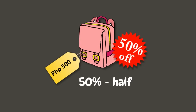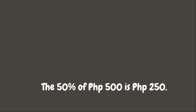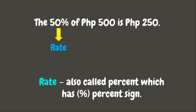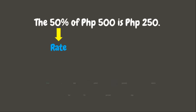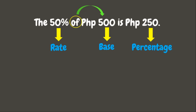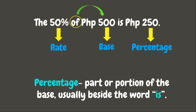Do you know what is 50% or half of 500 pesos? It is 250 pesos. This means that the 50% of 500 pesos is 250 pesos. Now, in this given statement, 50% is the rate. Rate is also called percent, which has a percent sign. While 500 pesos is the base. The base is the entire or original amount, which usually comes after the word 'of'. And finally, we have the percentage. 250 is the percentage. Percentage is the part or portion of the base, which usually comes beside the word 'is'.